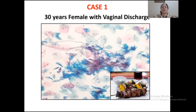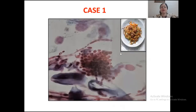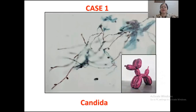Now coming to the answers. Case one showed an organism with pseudo-hyphae piercing squamous epithelial cells, giving a shish kebab appearance. Another picture showed pseudo-hyphae and many yeast forms giving the appearance of spaghetti and meatballs. A further picture showed pseudo-hyphae and many yeast forms resembling a balloon dog. The diagnosis of case one was candidiasis.